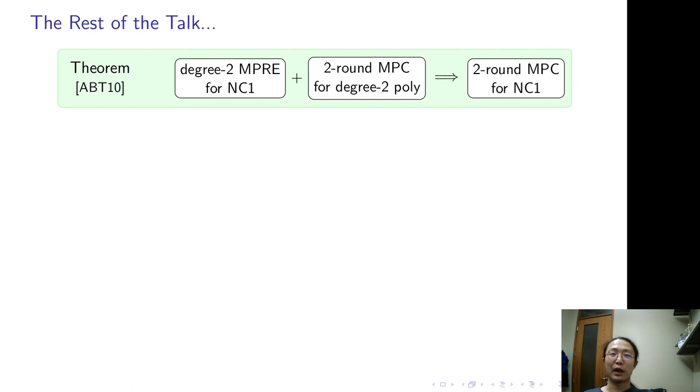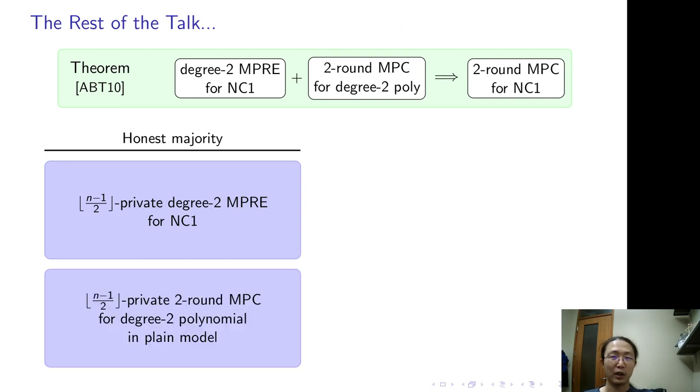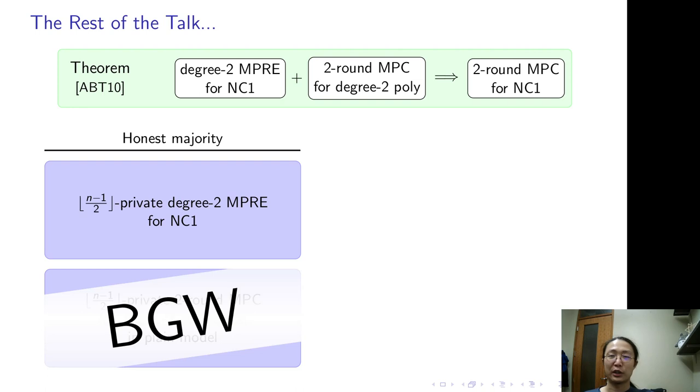Now comes to our result. With this theorem in mind, we just fill in the blanks. In the honest majority setting, we construct degree 2 MPRE that tolerates half minus 1 corruption. Combine it with a 2-round MPC computing degree 2, which we knew is BGW.